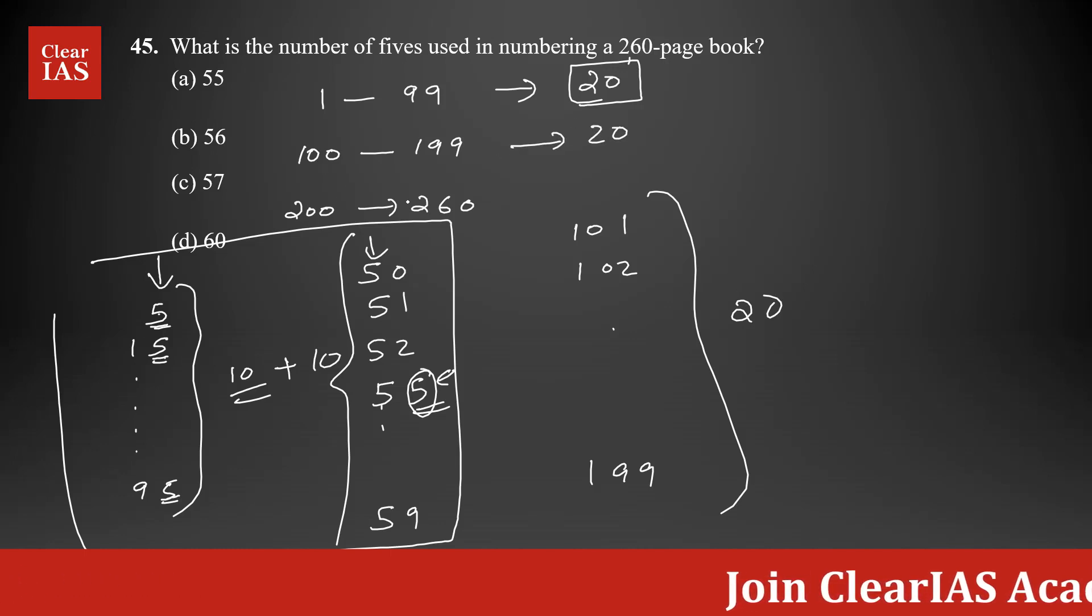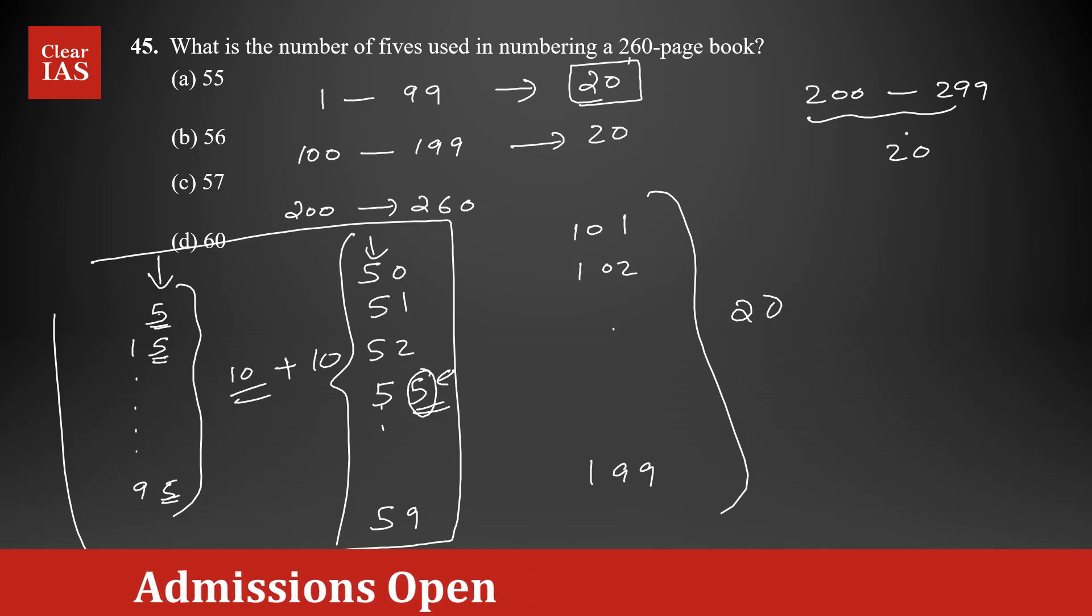Now we have from 200 to 260. The easy way to solve is: from 200 to 299 we already know it's going to be 25 5s because it is going to be the same. But as we discussed before, there are only 25 5s, but here you need to count until 260.